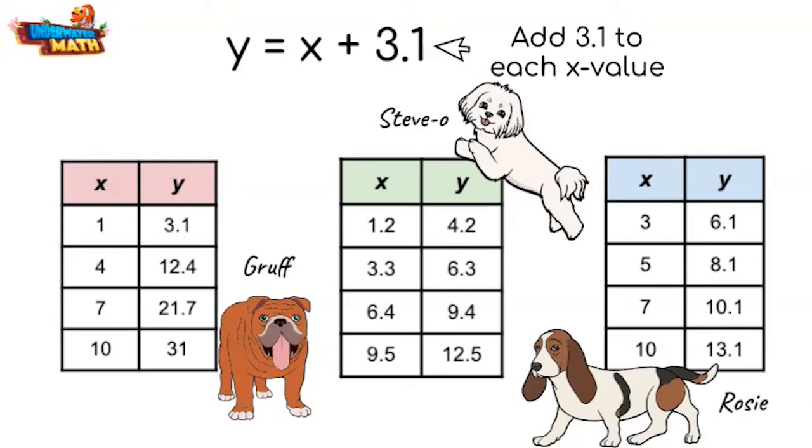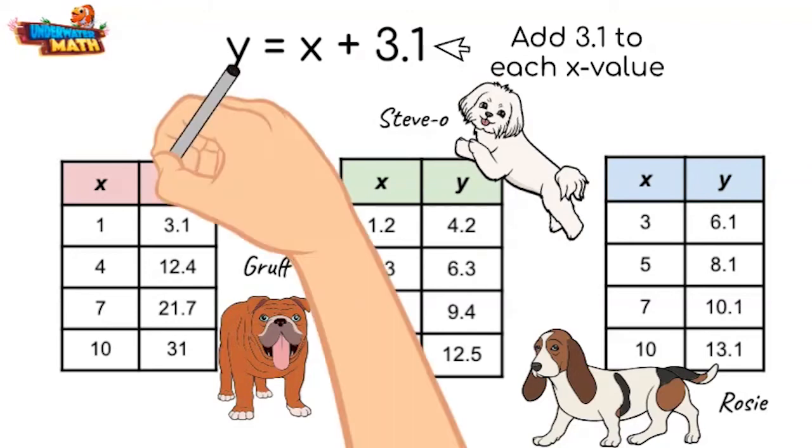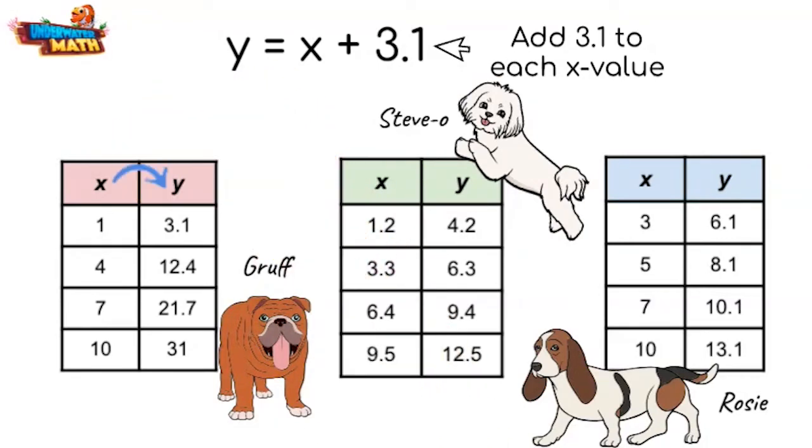What do you notice about Gruff's table? How are we going from x to y? Yes, each x-value is multiplied by 3.1 to get the y-value. This is not the correct table.